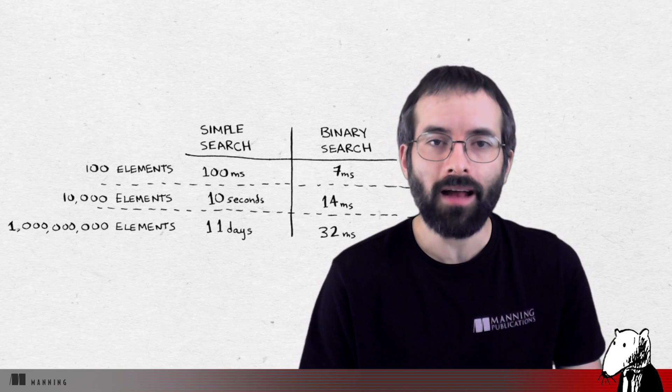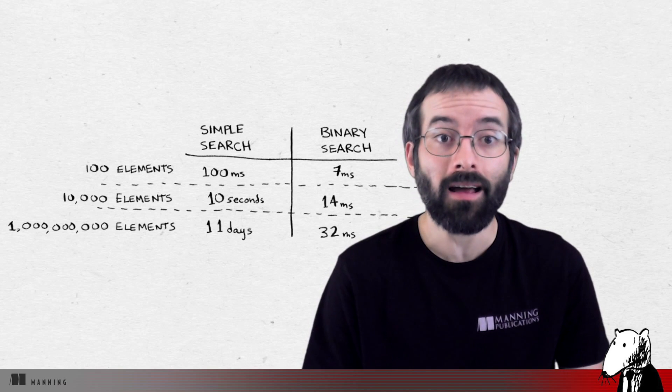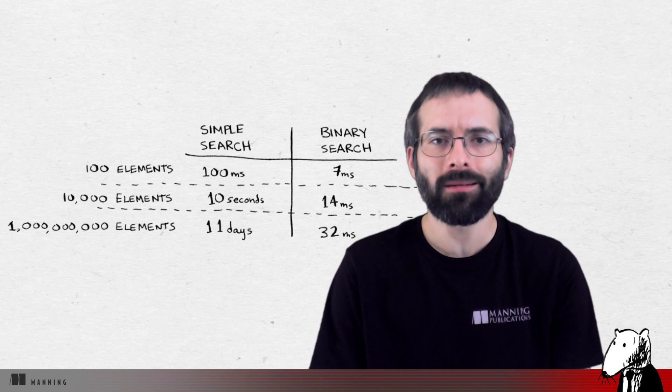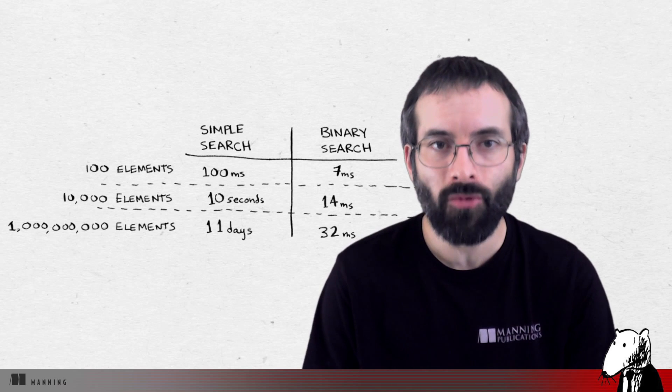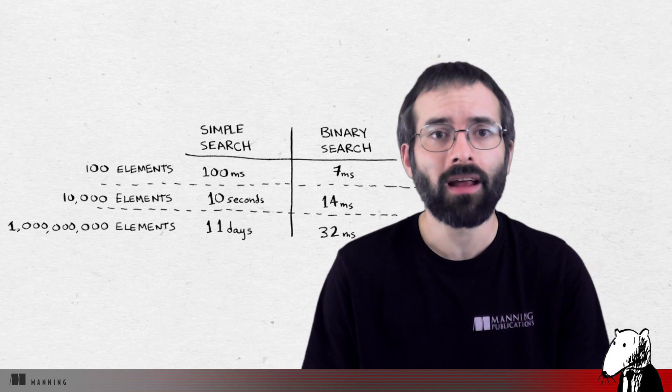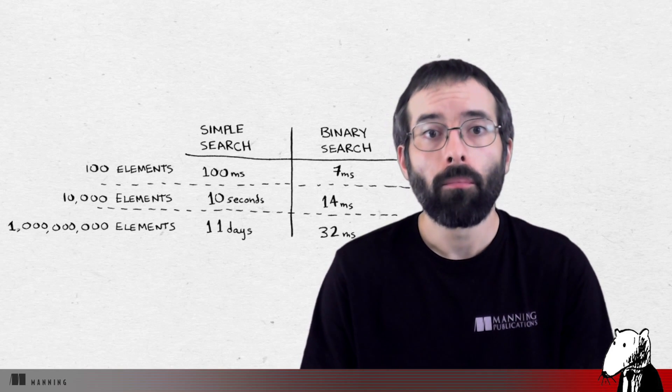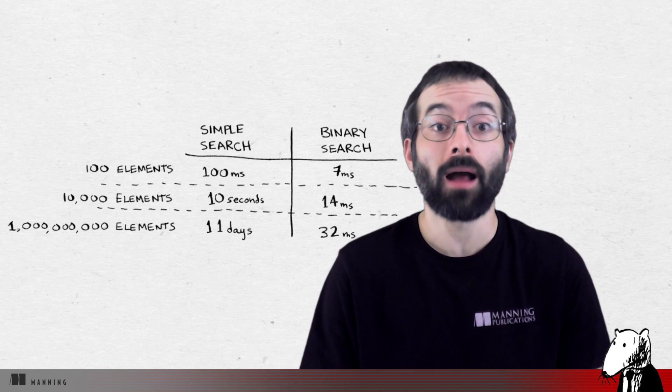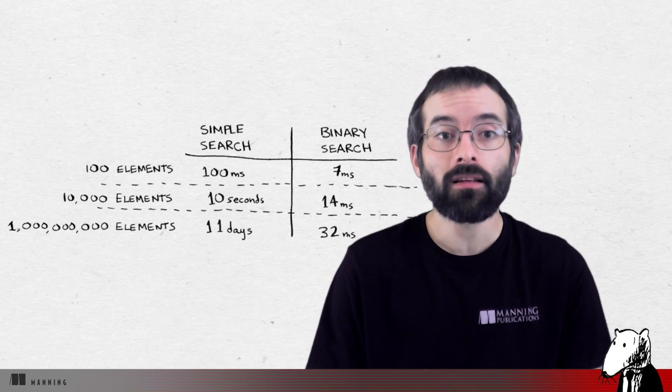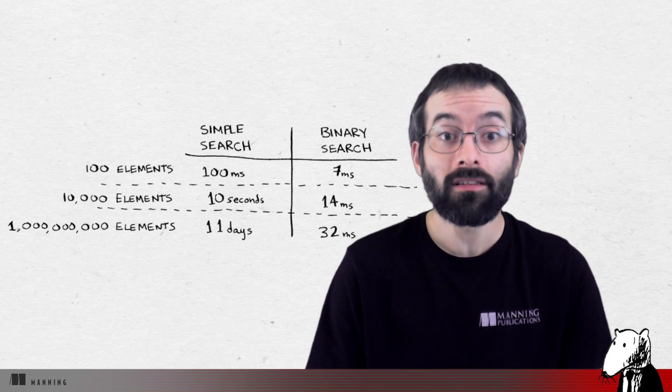Was he right? No, it turns out Bob is wrong. Dead wrong. The runtime for simple search with 1 billion items will be 1 billion milliseconds, which is 11 days. The problem is the runtime for binary search and simple search don't grow at the same rate. So as the number of items increases, binary search takes a little more time to run, but simple search takes a lot more time to run. So as the list of numbers gets bigger, binary search suddenly becomes a lot faster than simple search.